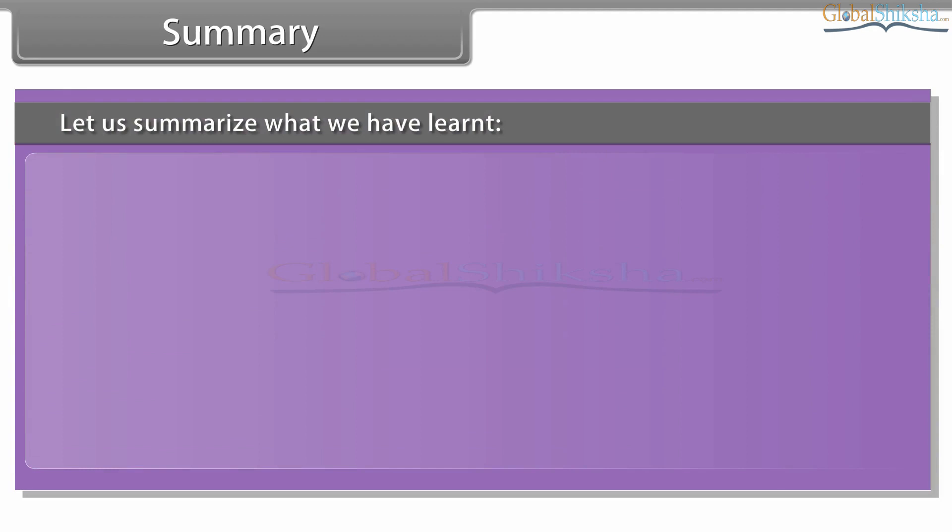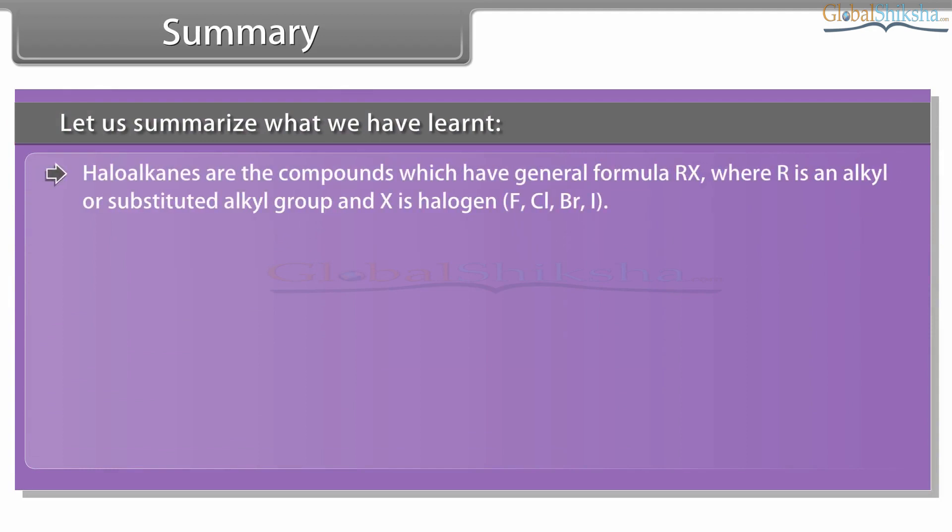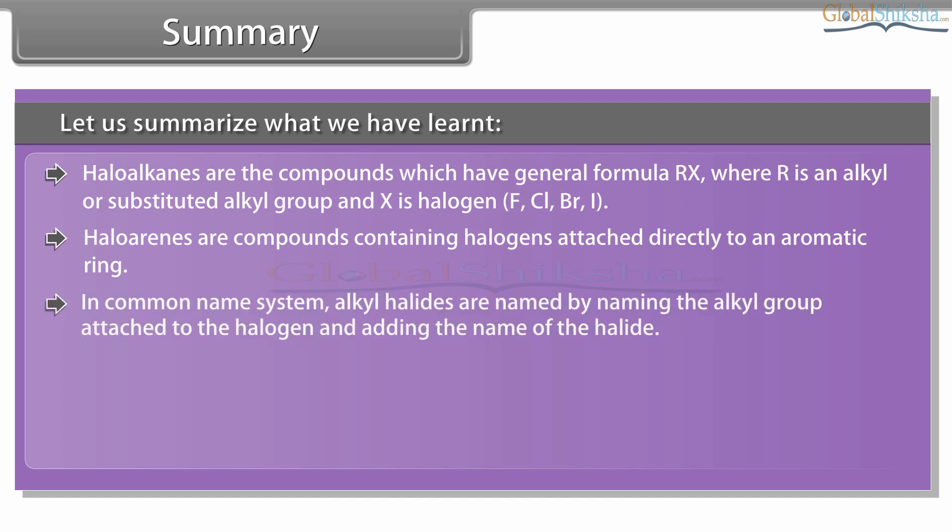Let us summarize what we have learned. Haloalkanes are the compounds which have the general formula RX where R is an alkyl or substituted alkyl group and X is halogen F, Cl, Br or I. Haloarenes are compounds containing halogens attached directly to an aromatic ring. In common name system, alkyl halides are named by naming the alkyl group attached to the halogen and adding the name of the halide. In IUPAC system of nomenclature, alkyl halides are named as halogen substituted hydrocarbon.